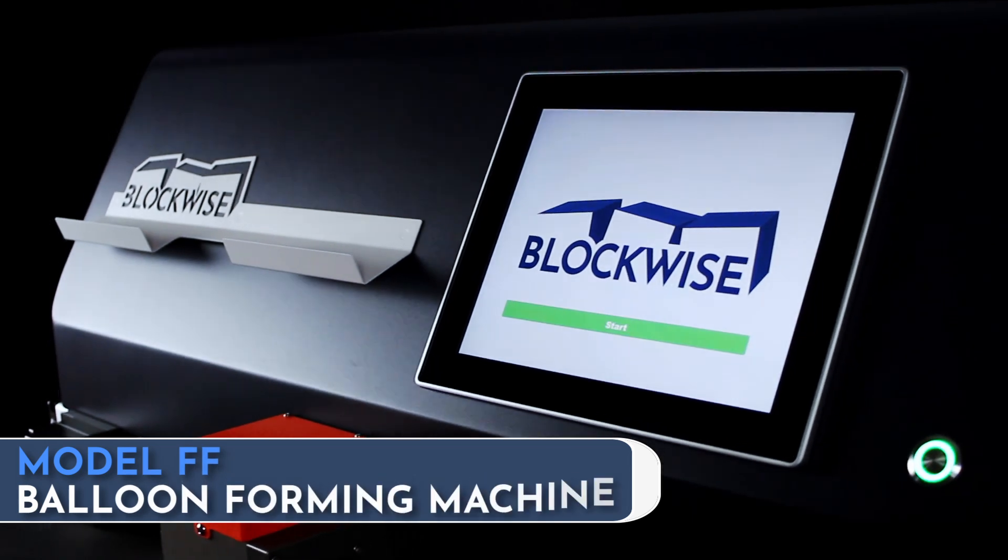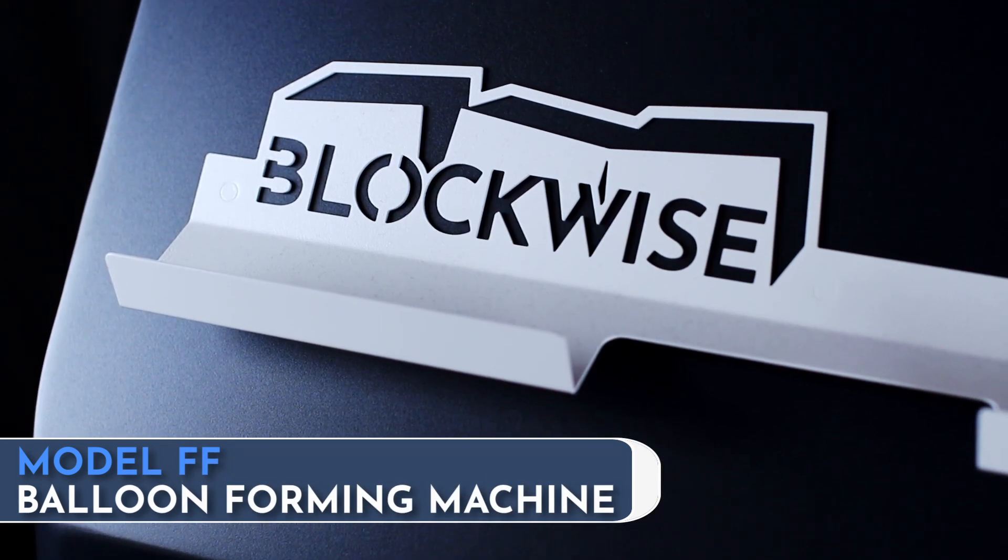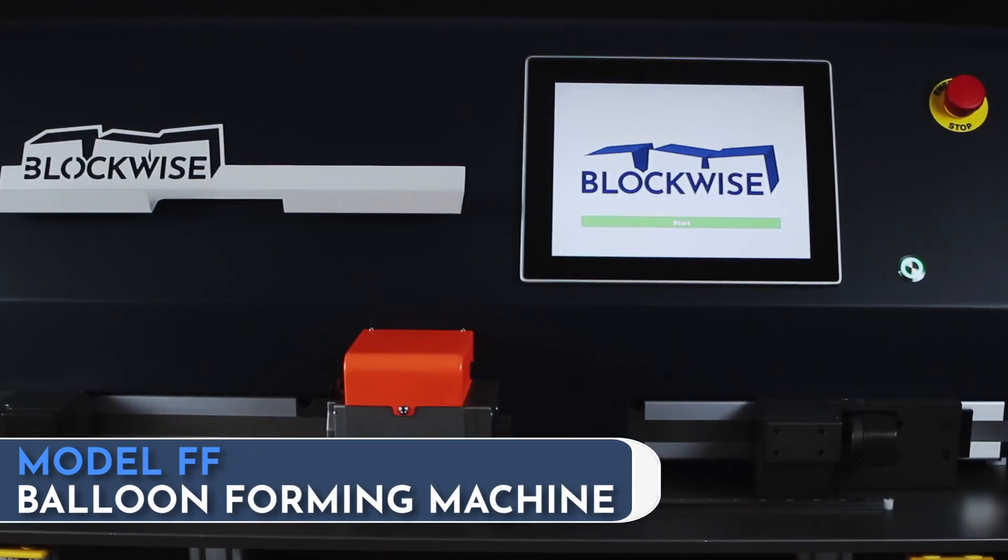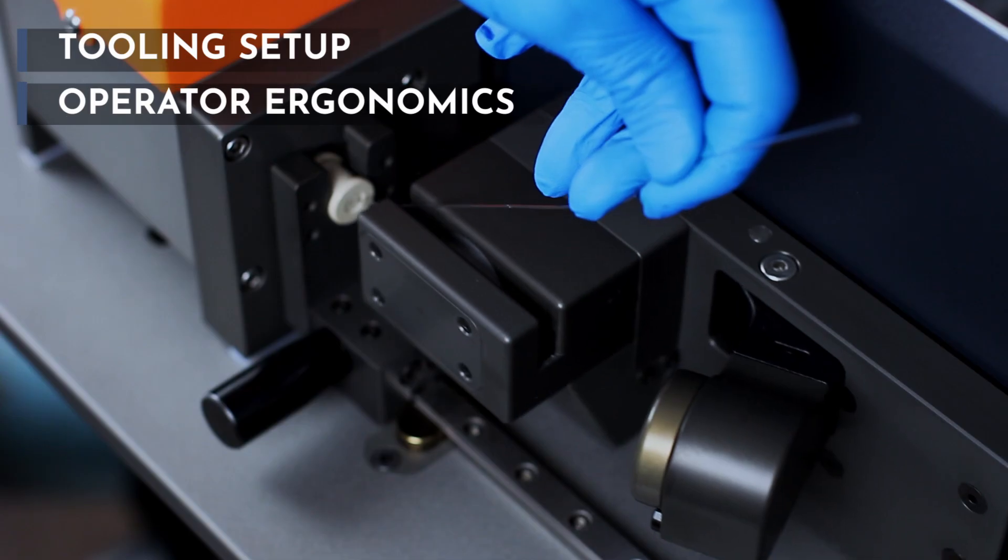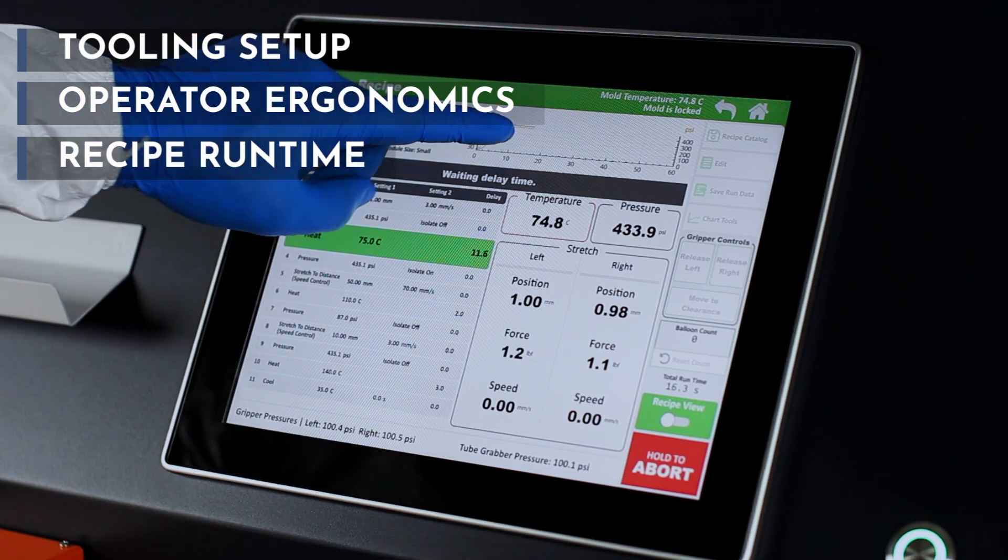The Model FF balloon forming machine from Blockwise Engineering drastically improves manufacturing cycle times through innovations in tooling setup, operator ergonomics, and recipe runtime.